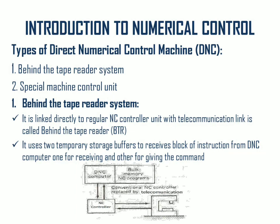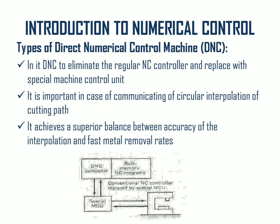The DNC configuration unit eliminates the regular NC control and replaces it with a special machine control unit. This is important in the case of communicating circular interpolation of the cutting part. It achieves a balanced ratio between the accuracy of interpolation and the fast metal removal rate.